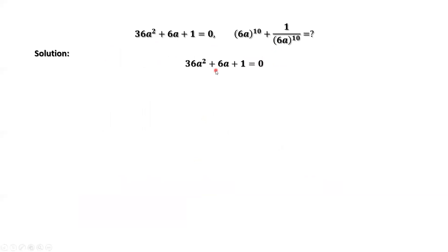This is the given condition. From this given condition, we have 6a does not equal 1. We can easily check it here: 36a squared equals 6a, then squared. If we replace 6a by 1 in the left-hand side of this equation, the left-hand side is 3. 3 is not equal to 0. Therefore, 6a does not equal 1.